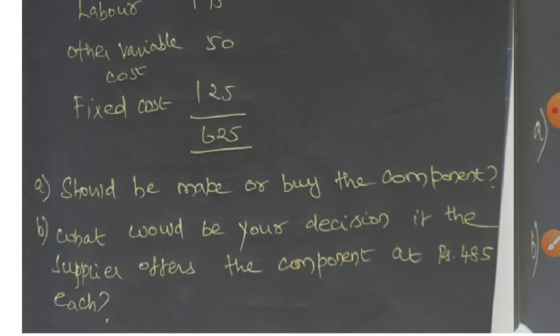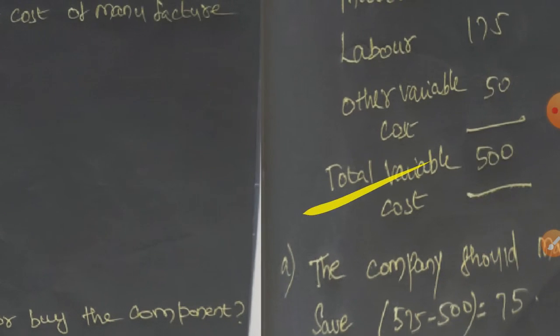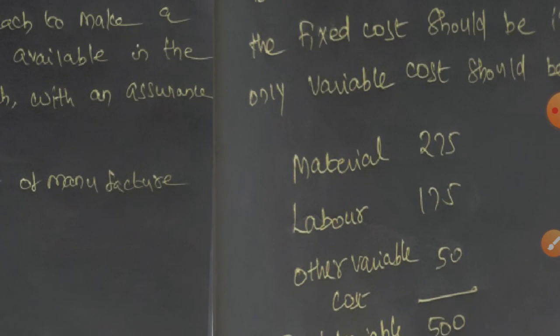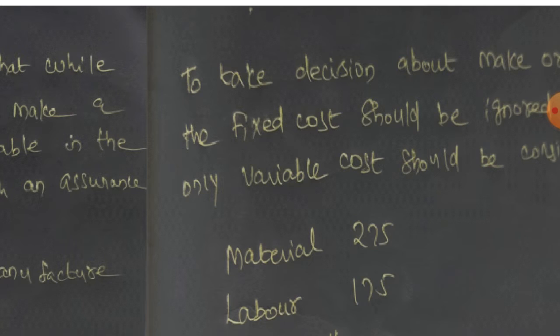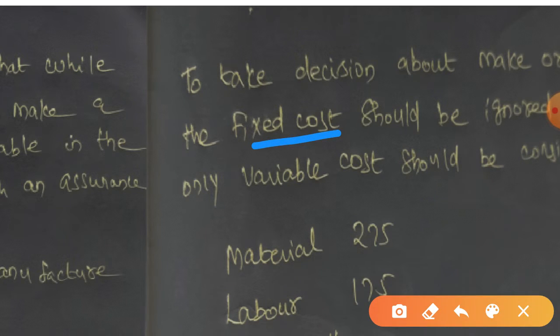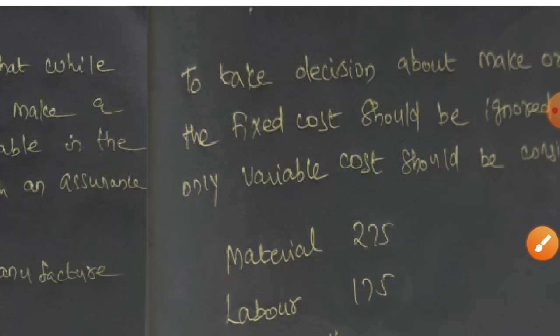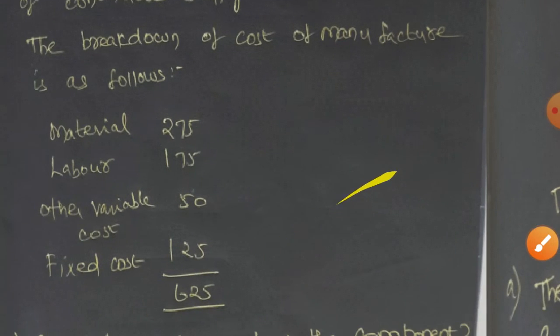So now let's go to the quick solution. In this particular pattern, that is the decision making pattern, we will look at the first step. If you are interested in the fixed cost, you will be interested in the material as well.